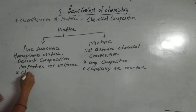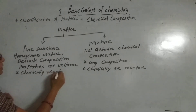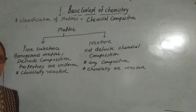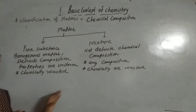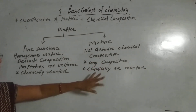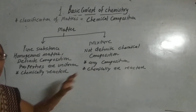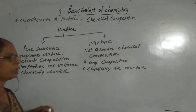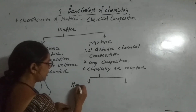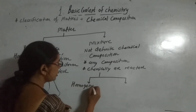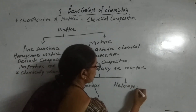In pure substances, the elements are chemically reacted. This is the basic difference about pure substances: they have definite composition, are homogeneous, uniform in properties, and the elements are chemically combined. Mixture is of two types: homogeneous mixture and heterogeneous mixture.